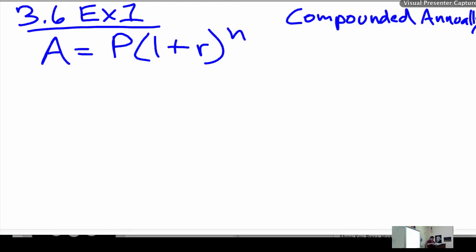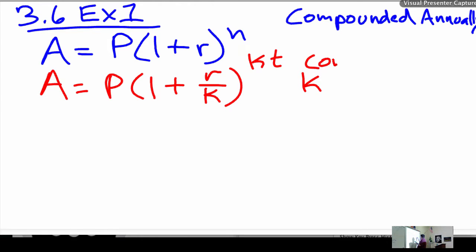And so, let me show you another formula that we're going to use. This is how we determine the amount of money we have if we start off with a certain amount of principal and we compound it so many times a year. So, it's compounded K times a year.